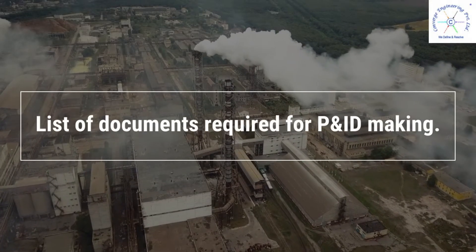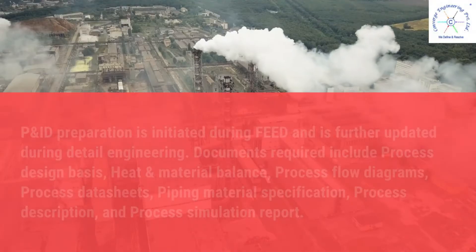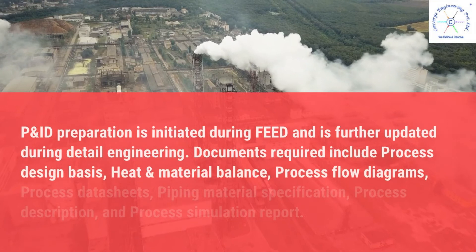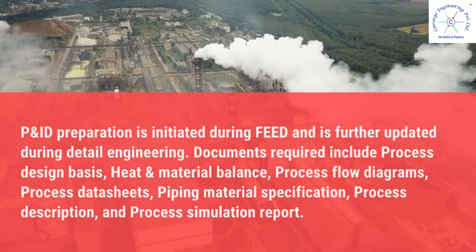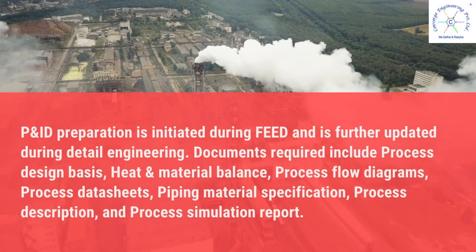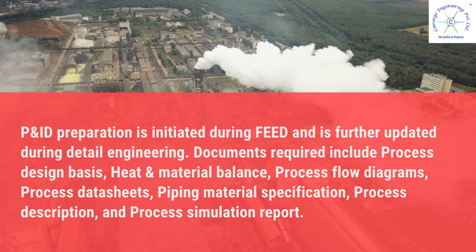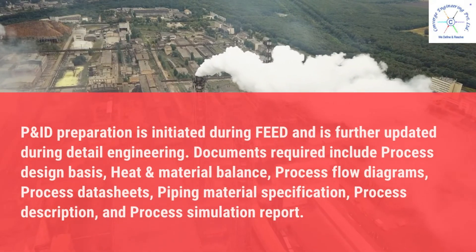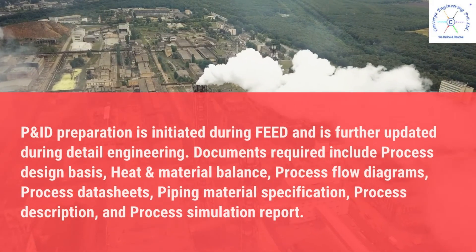List the documents required for P&ID making. P&ID preparation is initiated during FEED and is further updated during detail engineering. Documents required include: process design bases, heat and material balance, process flow diagrams, process data sheets, piping material specification, process description, and process simulation report.